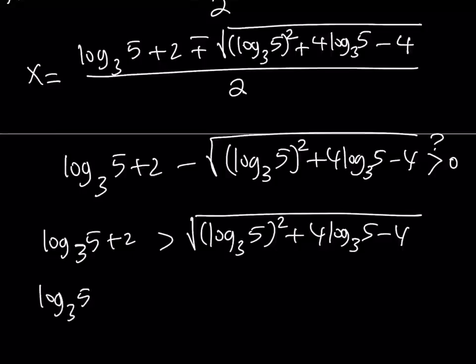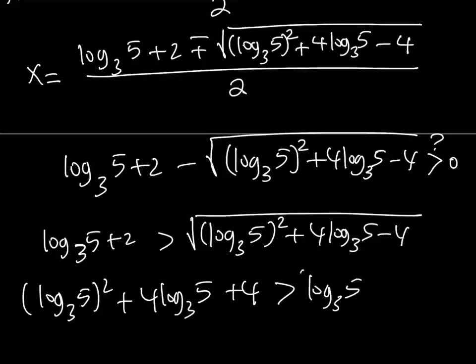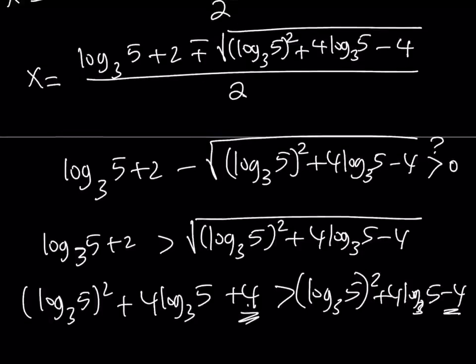And this is going to give you this quantity squared plus 4 times this plus 4. And you're going to notice that this is actually positive because the expression on the right-hand side is definitely smaller than the expression on the left-hand side because this is a positive 4, that's a negative 4. So this is true and both of our solutions are going to be positive.